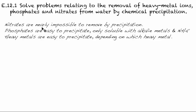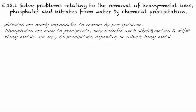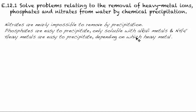First thing we need to notice: nitrates are nearly impossible to remove by precipitation. If you recall back to the earlier studies in tertiary water treatment, nitrates are removed through bacteria anaerobically. Phosphates are easy to precipitate because they're only soluble with alkali earth metals and ammonia. And heavy metals are easy to precipitate as well, and depending on which heavy metal, they will have slightly different solubility rules.